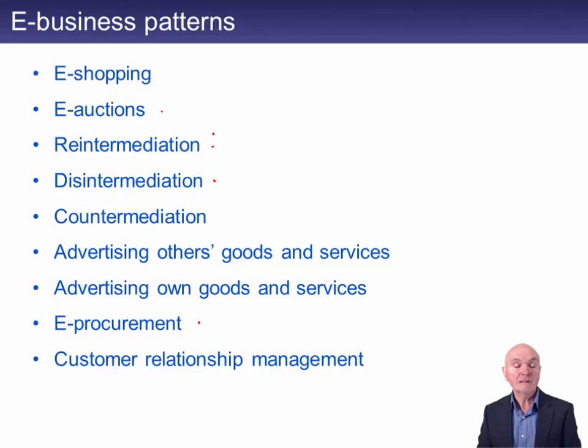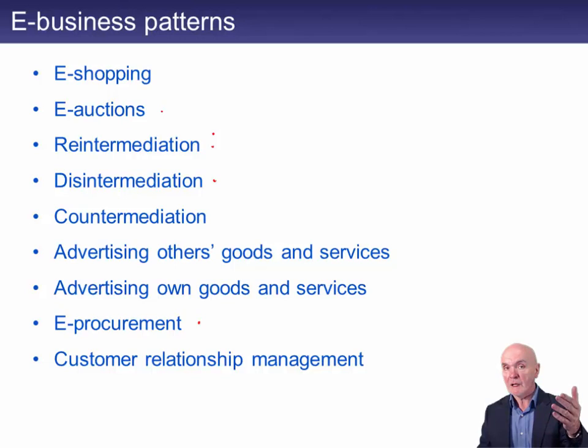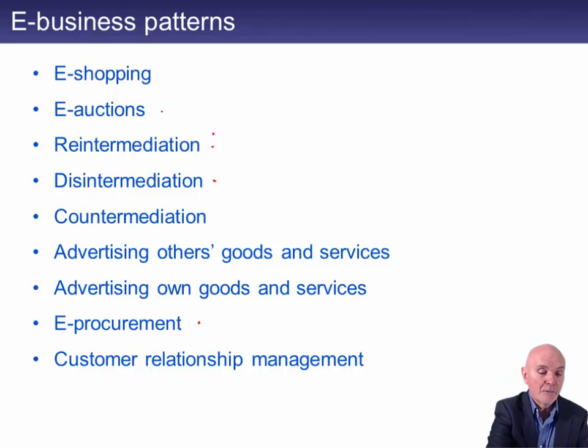Re-intermediation is where the middleman is put back. A site like Expedia is an online travel agent — rather than going directly to just British Airways, you go to Expedia and say 'I want to fly from here to here', and it brings up all the carriers who are flying there. But of course they're going to take a cut of the money.